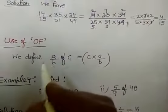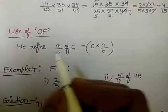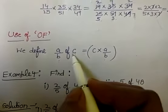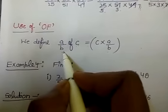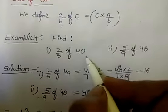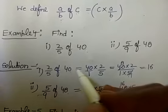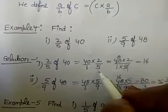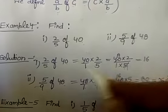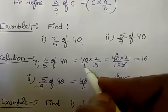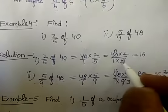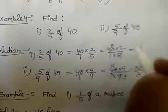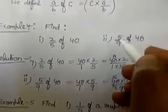Now the next topic: use of 'of'. We define A upon B of C as equal to C multiplied by A upon B. For example, find 2 by 5 of 40. So, 2/5 of 40 equals 40 multiplied by 2 upon 5. Writing 40 as 40 upon 1, we get 40 into 2 upon 1 into 5. Since 5 divides 40 eight times, the answer is 8 into 2 equals 16. In the same way, you can try the second part.